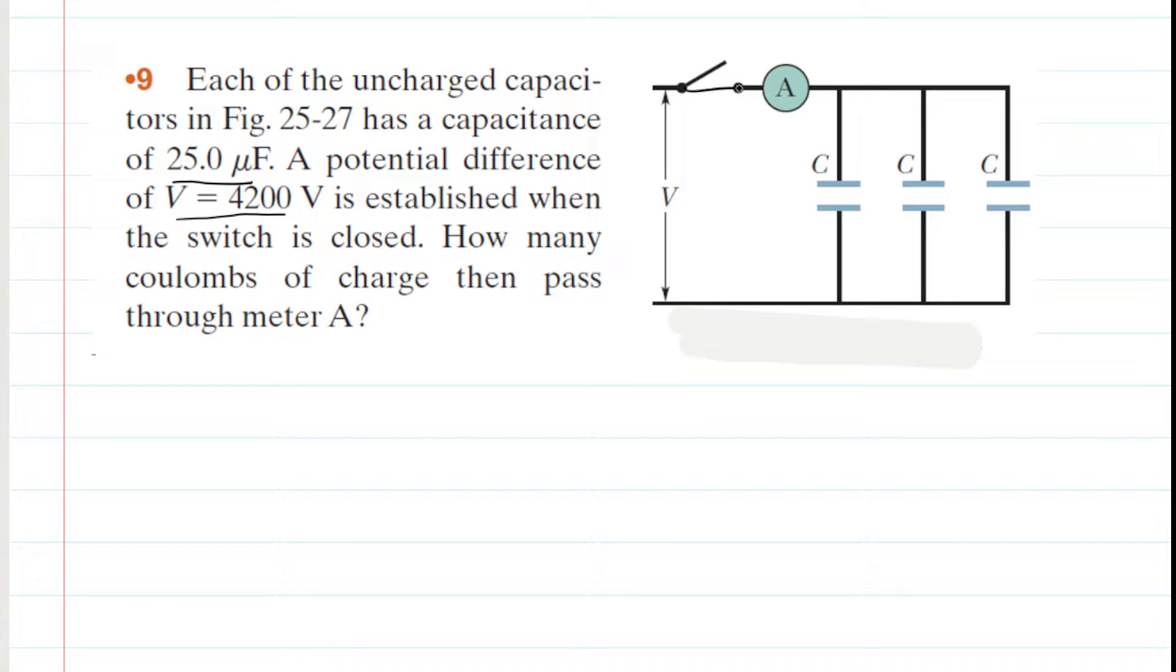Once the switch is closed, charge will begin to flow to the capacitors. If we wait a few moments, the capacitors will reach a maximum amount of charge. We have to figure out what is that maximum amount of charge, because that's how much charge is going to be flowing through the ammeter.